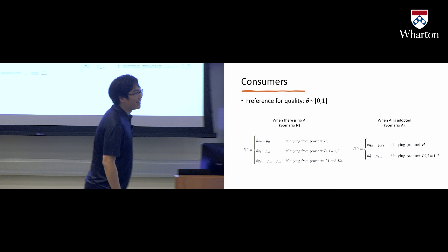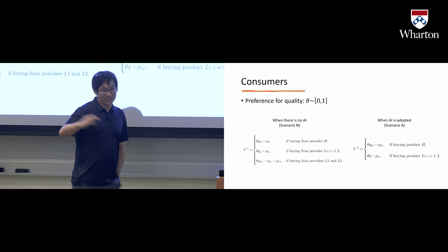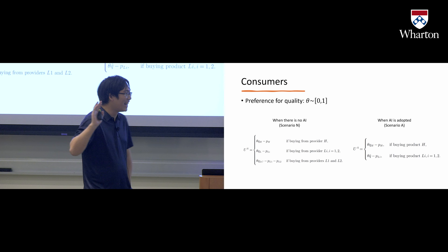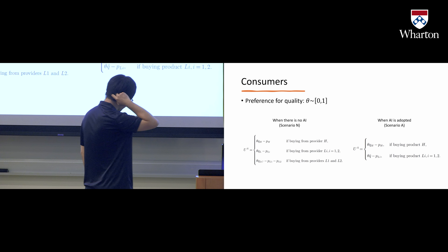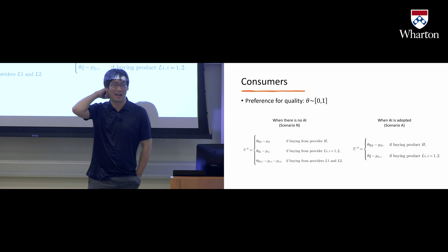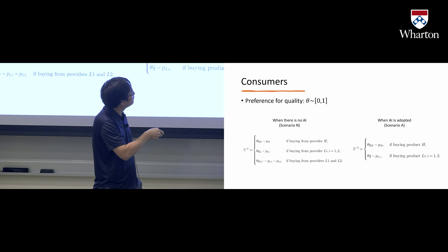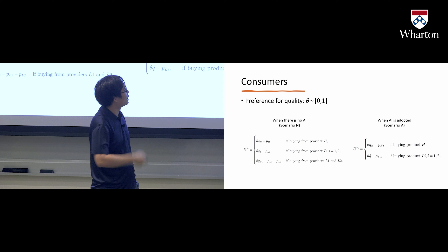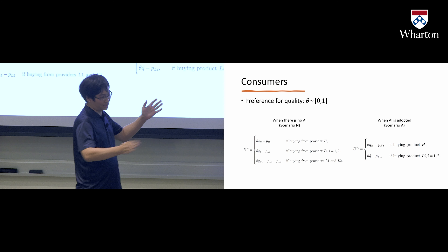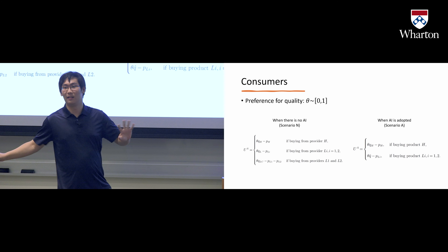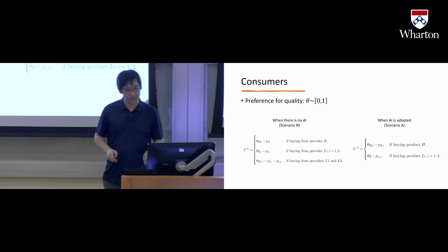We have consumers, and the consumer market is a typical vertical competition setup. We have a preference parameter theta, which specifies the preference for quality. The market can then be divided across different quality providers — this is very typical in vertical competition.